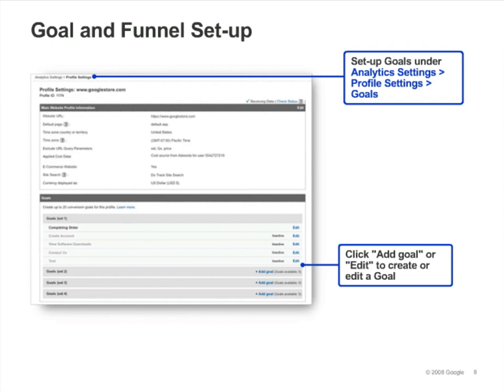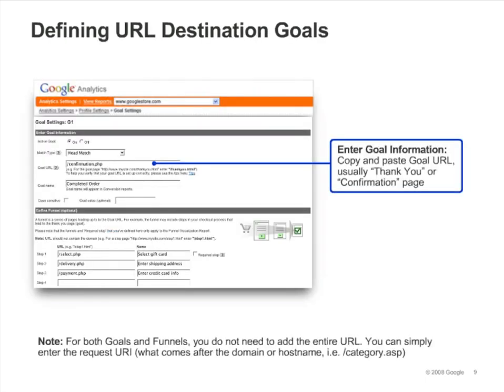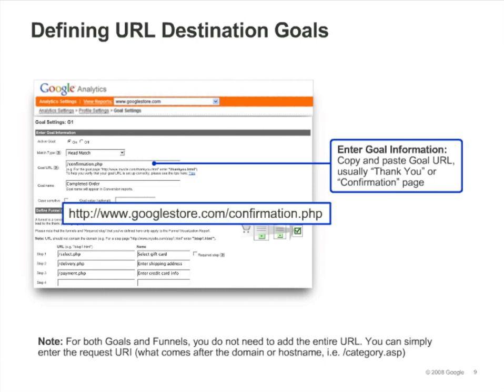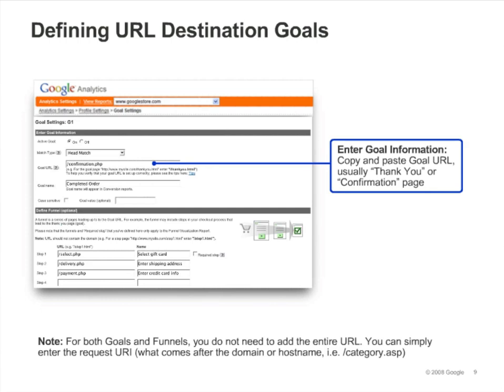You can create up to four sets of five goals each. To define a URL destination goal, select URL destination as the goal type. Next, enter the URL of the goal page. You don't have to enter the entire URL — you can simply enter the request URI, that's what comes after the domain or host name. So if the complete URL is www.googlestore.com/confirmation.php, you only need to enter /confirmation.php. Make sure that the URL you enter corresponds to a page that the visitor will only see once they complete the conversion activity. Pick something like the thank you page or a confirmation page. You can also enter a name for the goal; here we've entered 'completed order,' and this name will appear in your conversion reports.